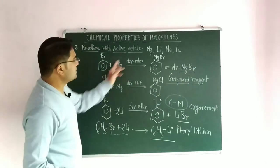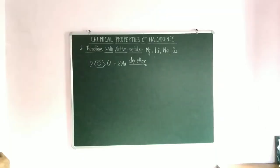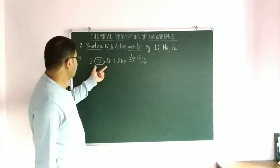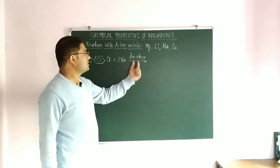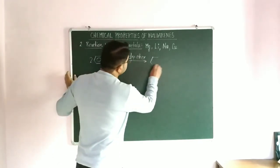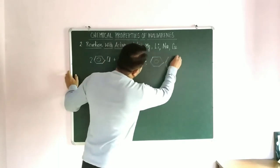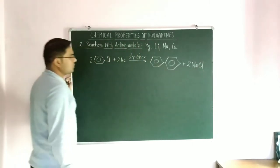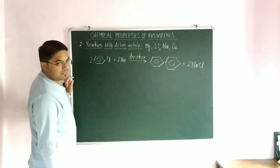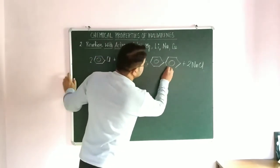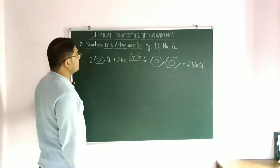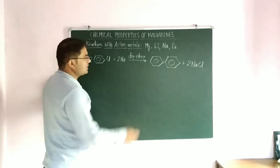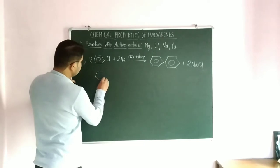The next reaction is with sodium metal. When chlorobenzene is treated with sodium metal in the presence of dry ether, an aromatic compound — biphenyl (C6H5–C6H5) — is formed with the elimination of 2 NaCl. This reaction is very similar to the Wurtz reaction, which I described in the previous video for haloalkanes, where alkanes are formed; here aromatic compounds are formed instead.